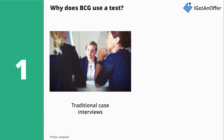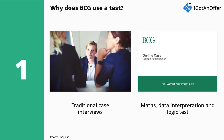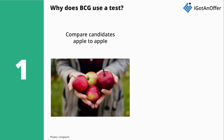Historically, BCG was only using case interviews to test candidates' maths and logic skills. The firm is still using case interviews today, but in addition, it has also started using a maths and logic test called the BCG Potential Test. This test has two major advantages over traditional case interviews. First, every candidate takes the same test, and the results are therefore directly comparable. Comparing the performance of two different candidates on two different case interviews led by two different interviewers is much more challenging. Effectively, the potential test lets BCG compare candidates apple to apple.